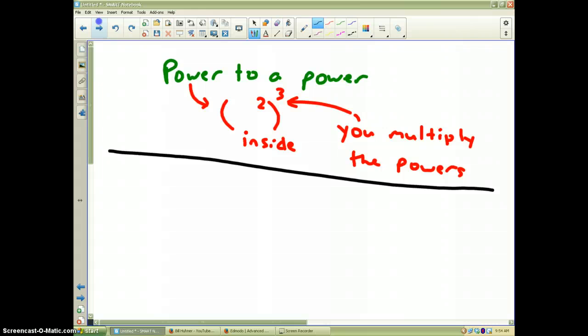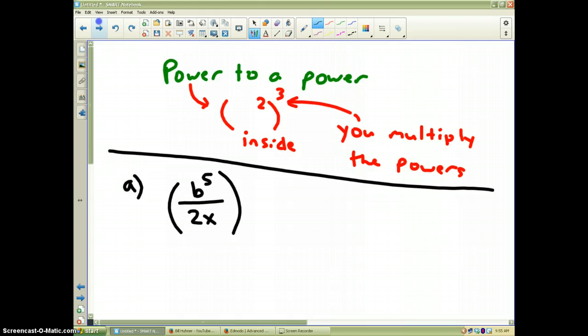And now, let's look at some examples. Let's look at example letter A. We are going to go with b to the fifth power, the whole thing divided by 2x, and then outside the parentheses we are going to square it. Now, if we recall from our first example, the power outside the parentheses applies to everything on the inside of the parentheses.